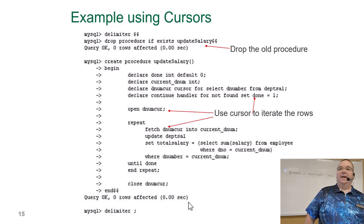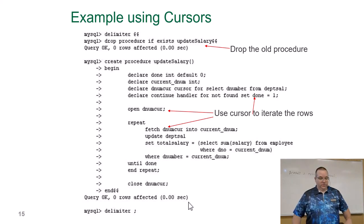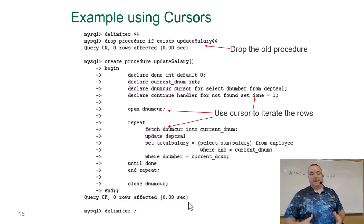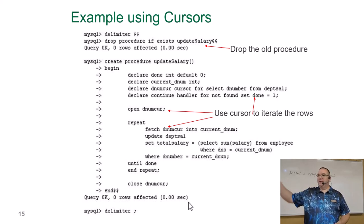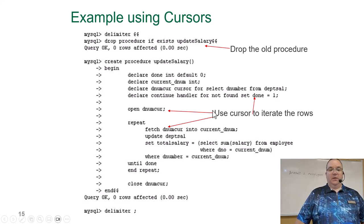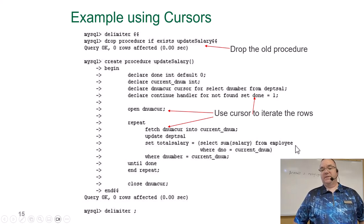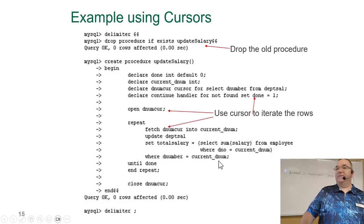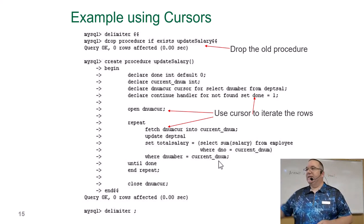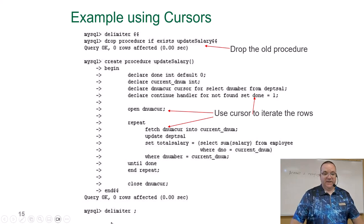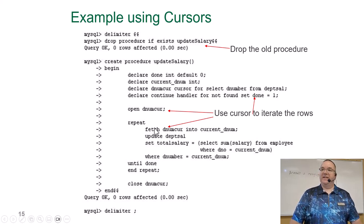Then we have REPEAT — it's a do-while essentially, to map it to other language constructs. FETCH dnum_cursor INTO current_dnum grabs the first row, passing the d_number column into the current_dnum variable. Then UPDATE department_salary SET total_salary equal to the sum of salary from employee WHERE d_number equals current_dnum — the same thing as before with param_one. This finishes, it hits UNTIL done — because zero means it's not done, it loops back up, fetches the next one, updates the row.